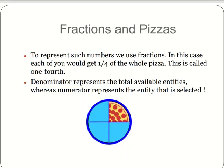To represent such numbers, we use fractions. In this case, each of you will get one-fourth of the pizza. This is called one-fourth. The denominator represents the total available entities, where the numerator represents the entity that is selected. So as you can see, this is one-fourth of the pizza. This is one-fourth, one-fourth, one-fourth, and one-fourth.